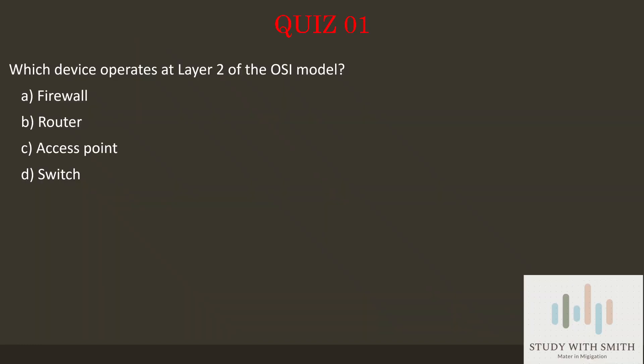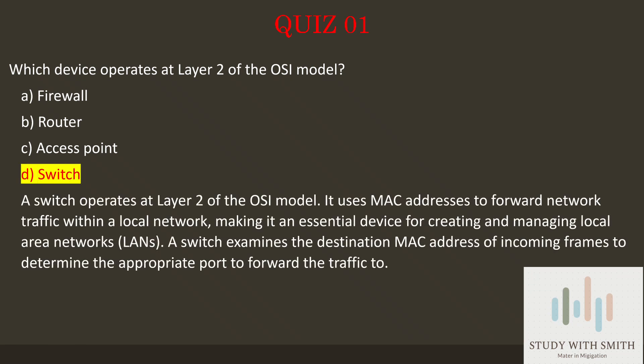Question 1: Which device operates at Layer 2 of the OSI model? Pause the video now to select the best answer. The answer is D — Switch. A switch operates at Layer 2 of the OSI model. It uses MAC addresses to forward network traffic within a local network, making it an essential device for creating and managing local area networks (LANs). A switch examines the destination MAC address of incoming frames to determine the appropriate port to forward the traffic to.